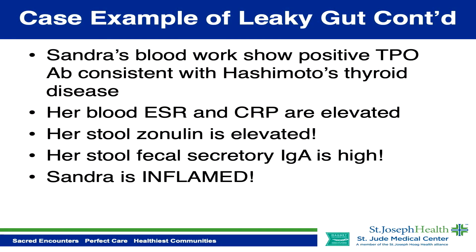Sandra comes to see me and we do comprehensive bloodwork. We find she has a positive TPO antibody — the thyroid peroxidase antibody — consistent with Hashimoto's thyroid disease, an autoimmune condition where the antibody attacks and inflames the thyroid. Her ESR (sed rate) and CRP are elevated, indicating systemic inflammation. Her gut microbiome test shows elevated zonulin, confirming leaky gut. She also has elevated fecal secretory IgA, another marker of gut inflammation. Essentially, Sandra is inflamed throughout.